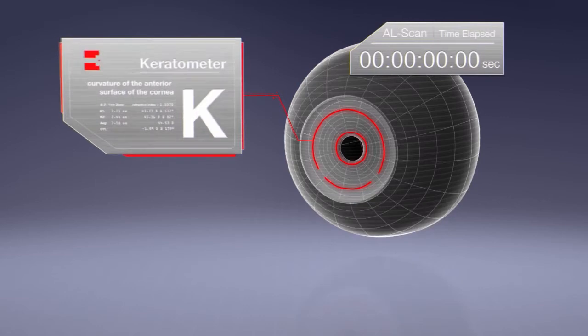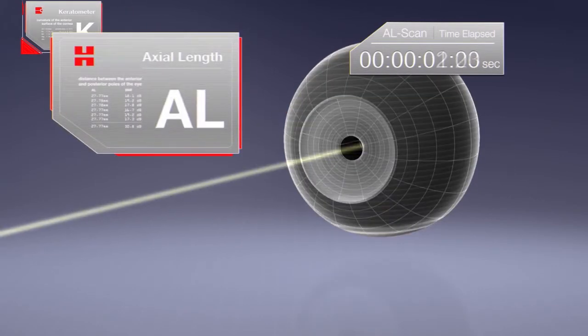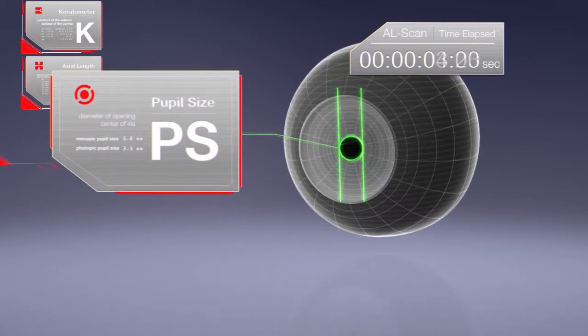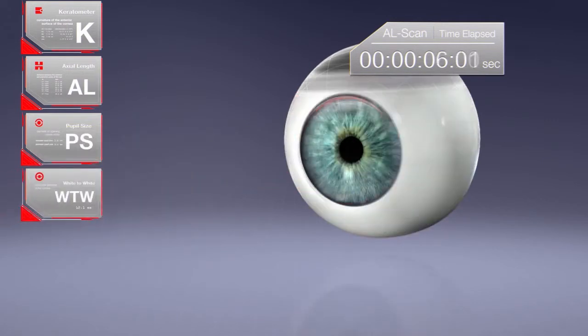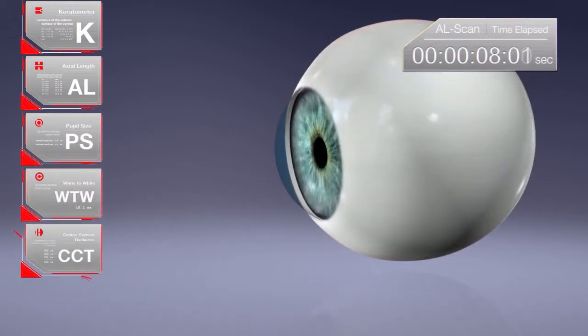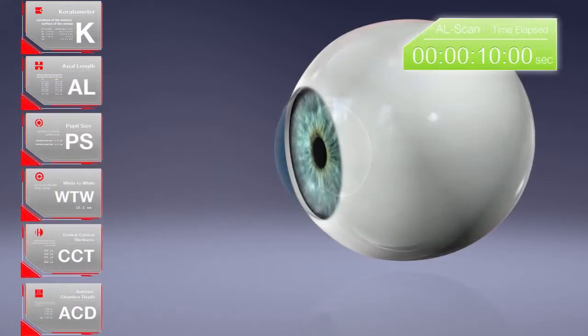Corneal curvature radius, axial length, pupil size, white-to-white distance, central corneal thickness, and anterior chamber depth.